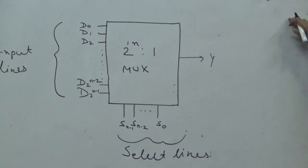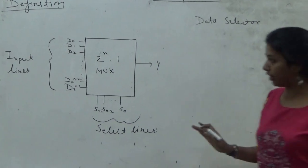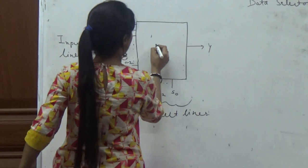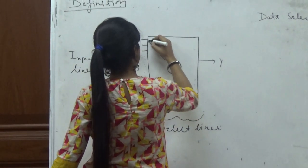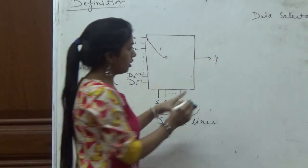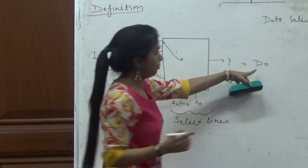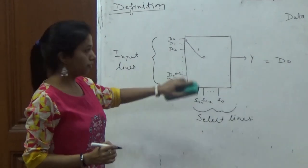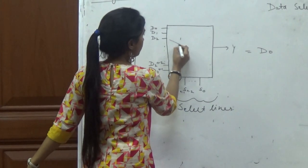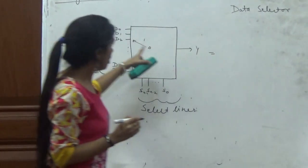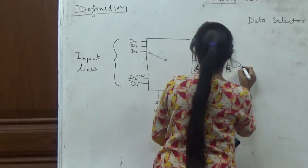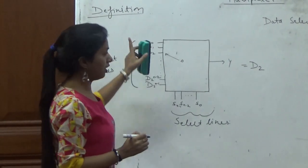As the name data selector suggests, it is selecting data from the input. Inside of it, there is a dial. When it connects to a position, then my Y0 will be equal to D0. When my dial is connected to D2, then the information stored at D2 position is directed to the output. The select lines control the operation.